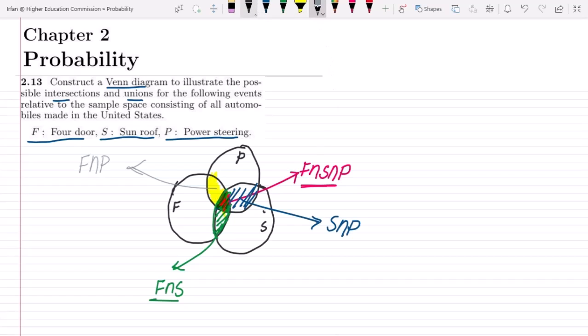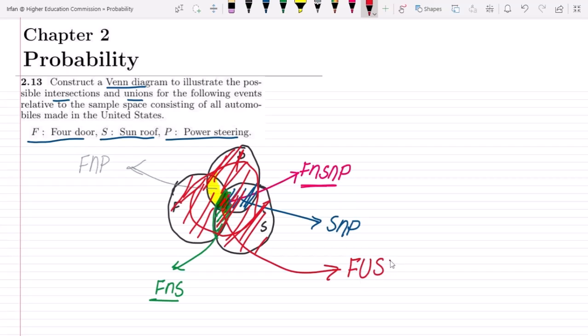So these are basically the areas. Similarly, in order to see the union here, we have the option and there are basically all these. We can see them and these are all the areas. These basically represent the four doors union sunroof union power steering. Just you have to keep in your mind that all these common areas will be represented only once here, because these are basically in the sets, and in set theory every item has to be represented only once.